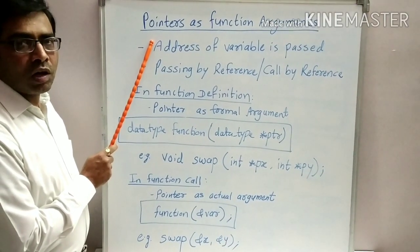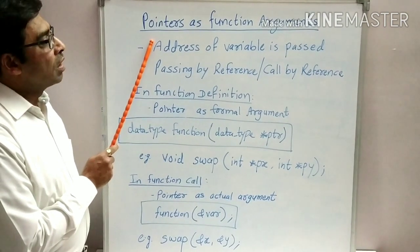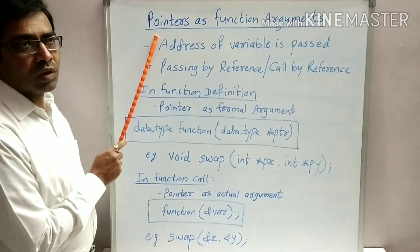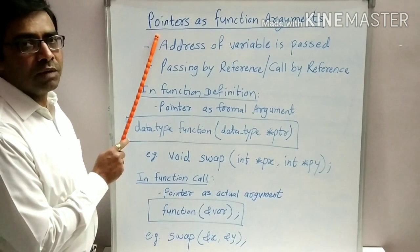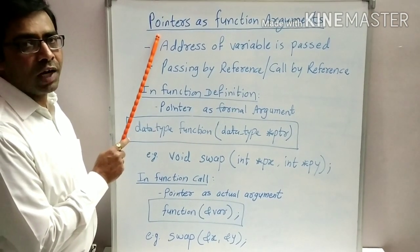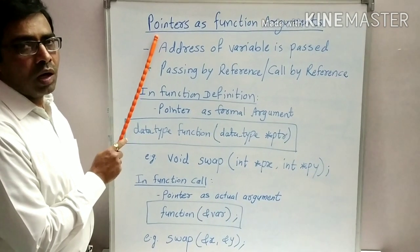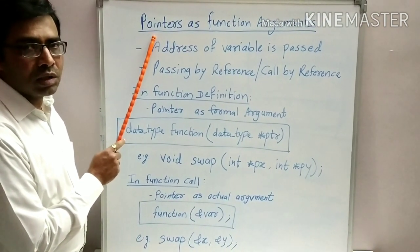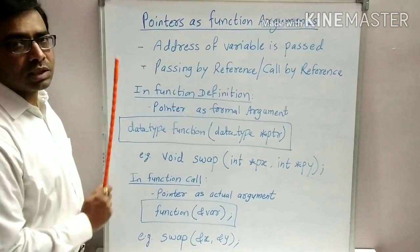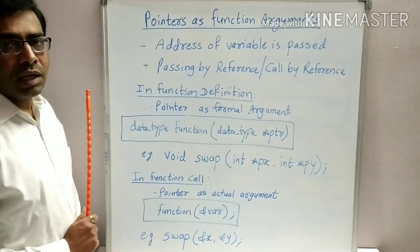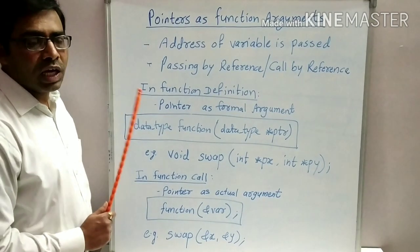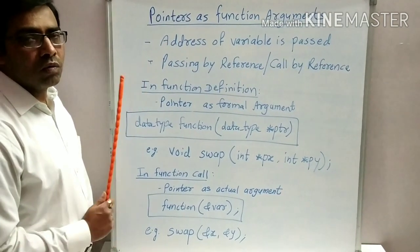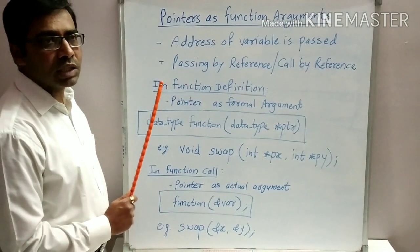All of you know that when we are using a function in a C program, we have to pass different types of arguments to the function. We can pass normal variables as arguments, we can pass an array as argument, we can pass a structure as argument. Now, we will pass pointers as argument.